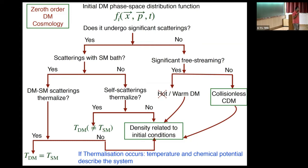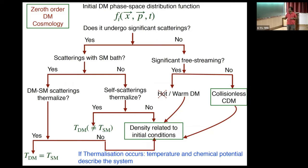If dark matter undergoes significant free-streaming, there are broadly two classes. Hot dark matter has free-streaming so large that the largest structures form first — structure formation is top-down — which contradicts observations, since we see galaxies at very high redshifts. So that is ruled out; neutrinos would have been hot dark matter. Warm dark matter is allowed as long as the free-streaming length is less than about 100 kiloparsecs. In all these cases the density is related to the initial conditions.